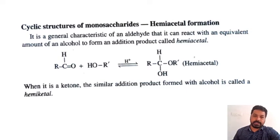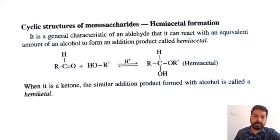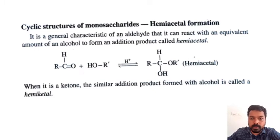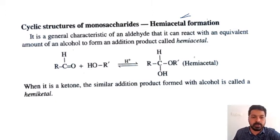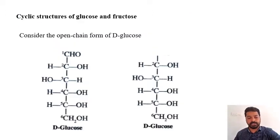Coming to the cyclic structure of monosaccharides — that is, hemiacetal formation. If you take any aldehyde and an alcohol, in the case of carbohydrates they contain aldehydic or ketonic functional groups and OH groups. When you treat the carbonyl functional group with an OH group, it forms a hemiacetal structure. Similarly, a ketone forms a hemiketal structure.